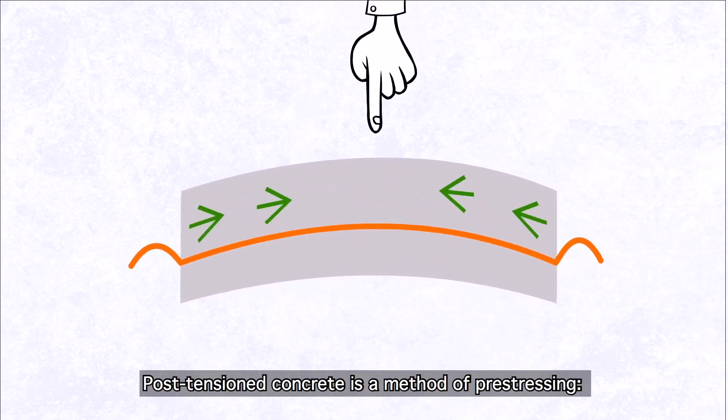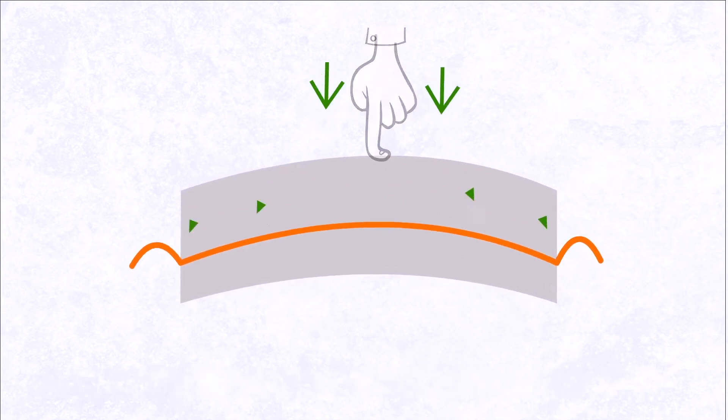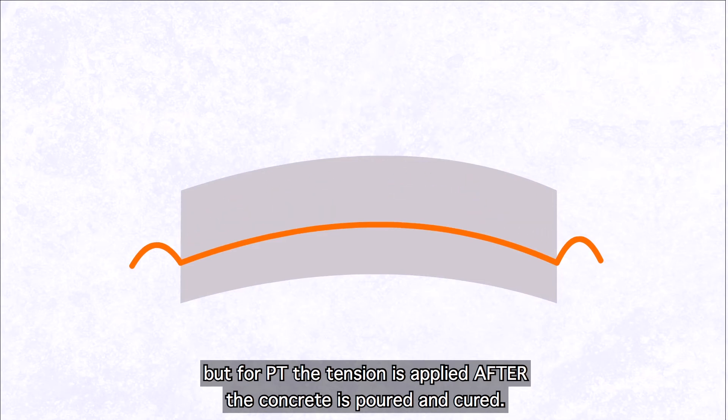Post-tensioned concrete is a method of pre-stressing. The concrete is stressed before the loads are applied to the structure. But for PT, the tension is applied after the concrete is poured and cured. It is therefore easier to install.